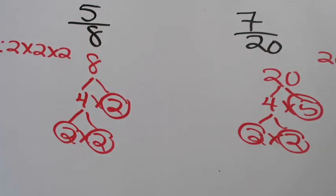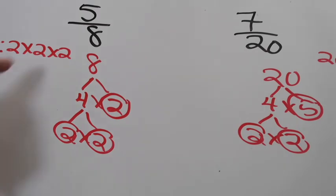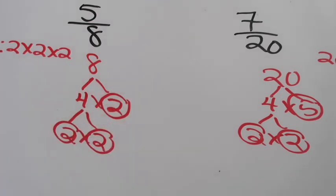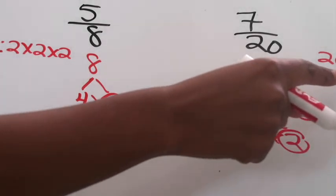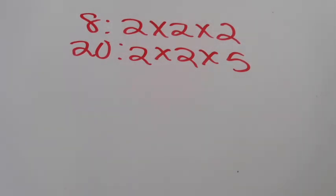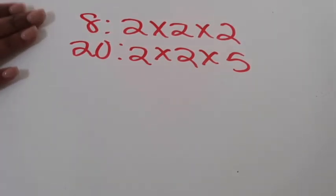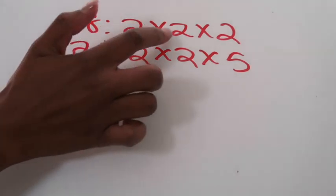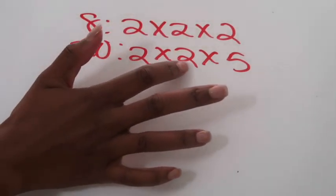That's step one. Then you want to take your list of prime factors and see if you can find common prime factors between both the factor tree of 8 and the factor tree of 20. So here is my list of factors for 8: 2 × 2 × 2, and my list of factors for 20: 2 × 2 × 5. I can immediately see a pair of twos, so I'm going to group those together. Here's another pair of twos, so I'll group those together. And then these two are lonely factors that don't have someone to pair up with.